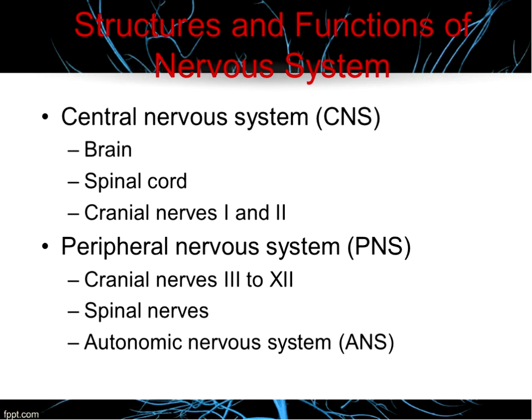The nervous system is responsible for the control and integration of the body's activities. All motor, sensory, autonomic, cognitive, and behavioral activities are controlled by the nervous system. When you think about the nervous system, just think of it basically as an electrical conduction system. It receives stimuli — which could be internal or external — and communicates information from one part of the body to another.